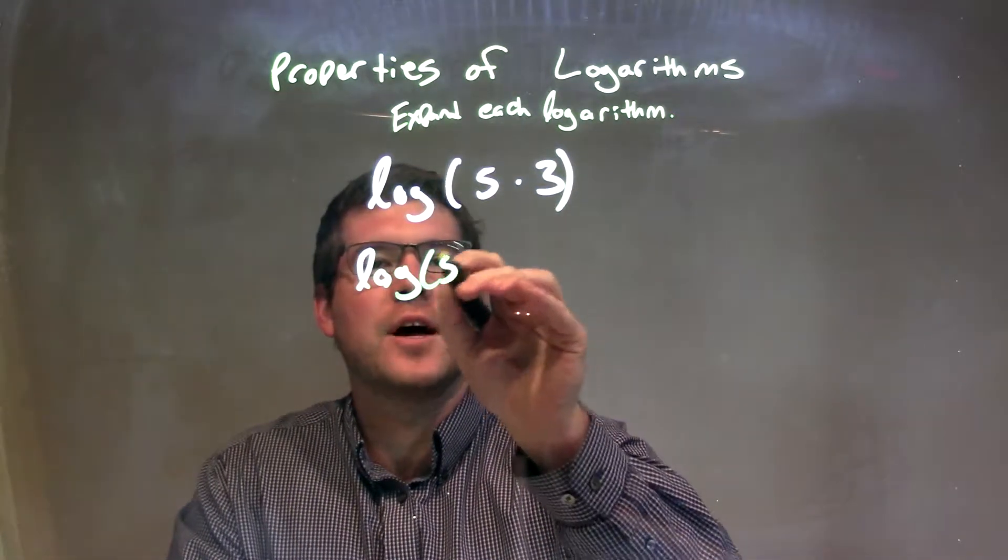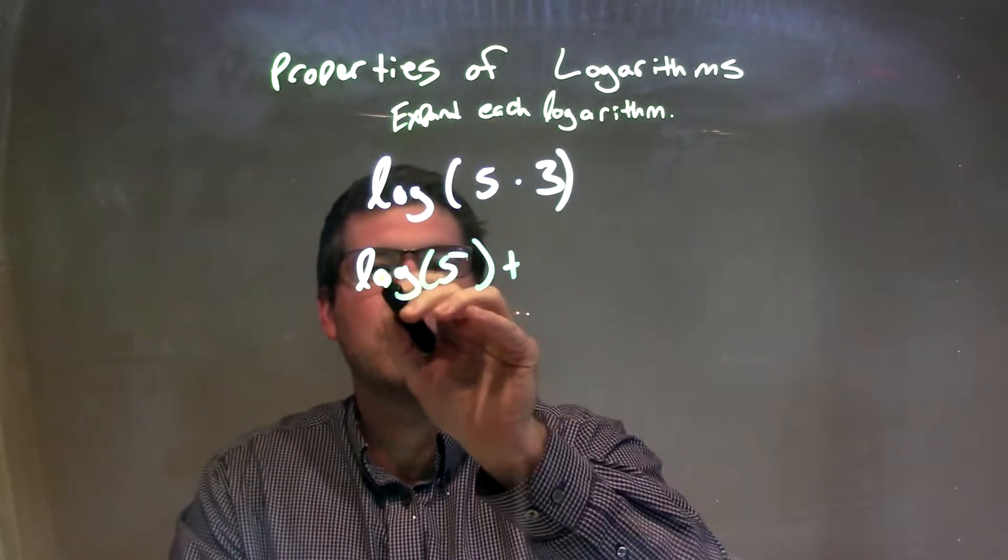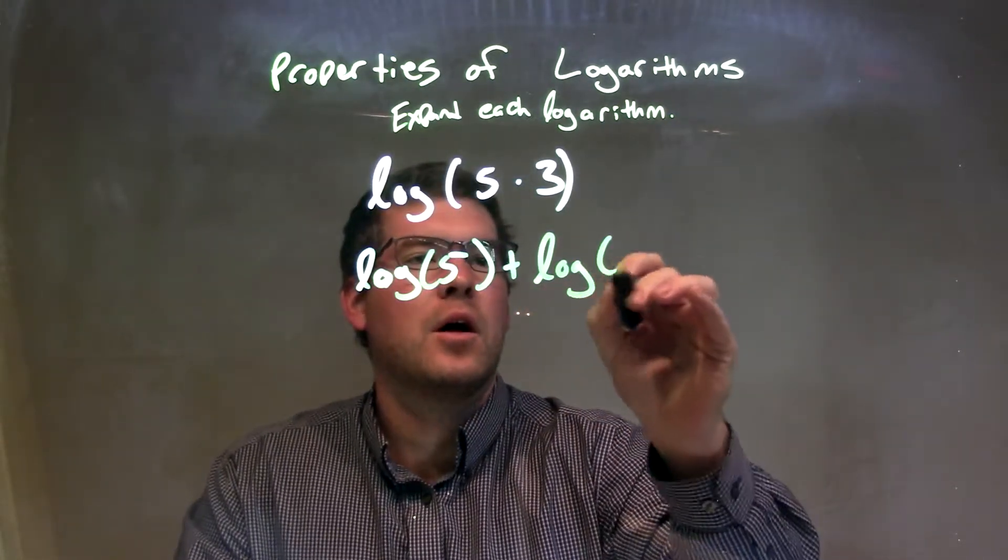So we have the log of the first number, which is 5, plus, so the multiplication becomes plus here, plus the log of 3.